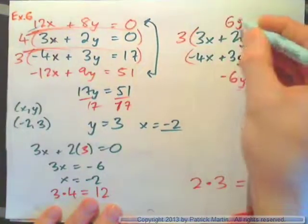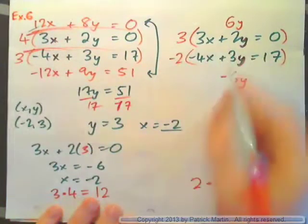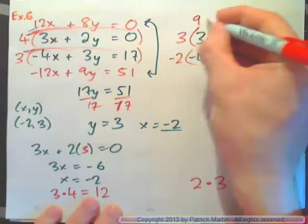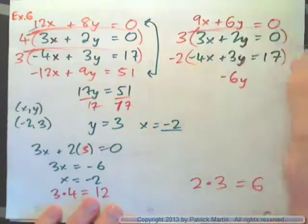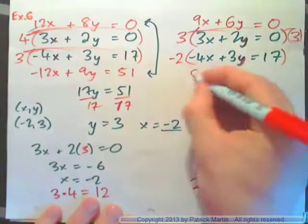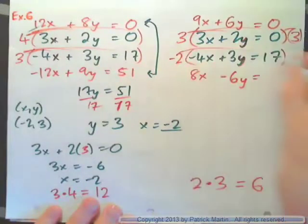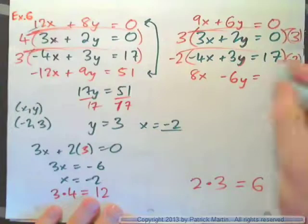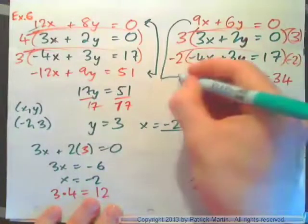3 times 2 gives 6y. Negative 2 times 3 gives negative 6y. So multiply top by 3 and you get 9x plus 6y equals 3 times 0 which is 0. Negative 2 times negative 4x is 8x. Negative 2 times 3y is negative 6y. And negative 2 times 17 is negative 34. And so now, if you add these equations together, it should all work out.